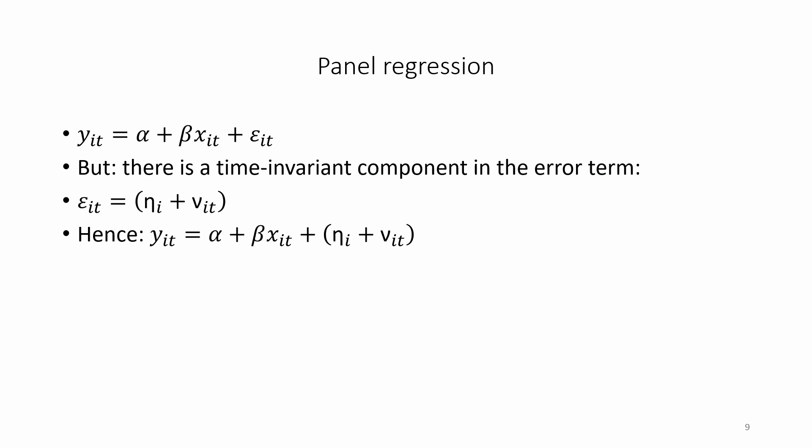Note that eta_i does not have an index for t because it does not change over time. Eta_i is usually considered to be not directly observed in the data. It is time invariant, i.e. it does not change over time, it stays the same.